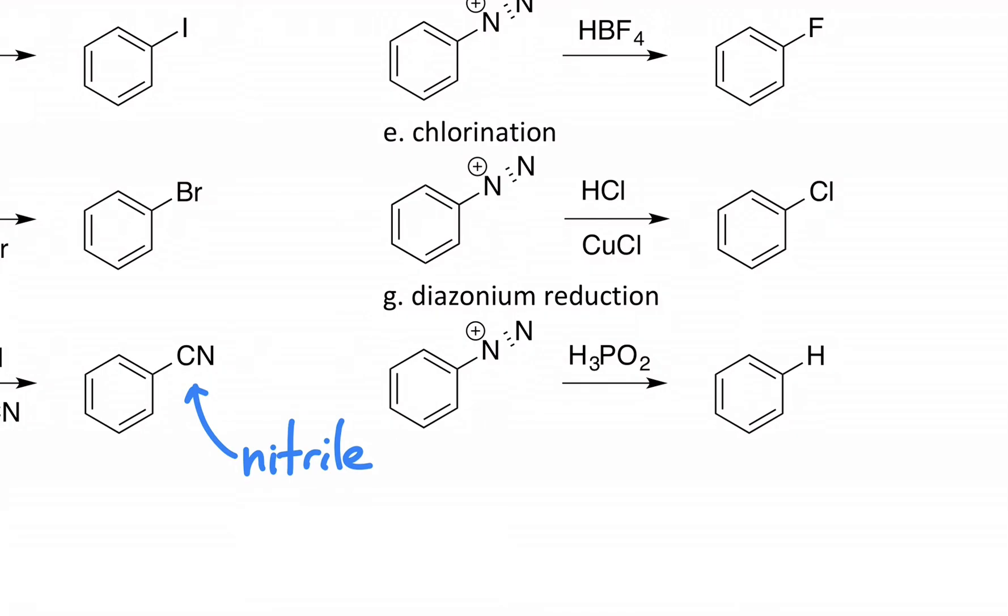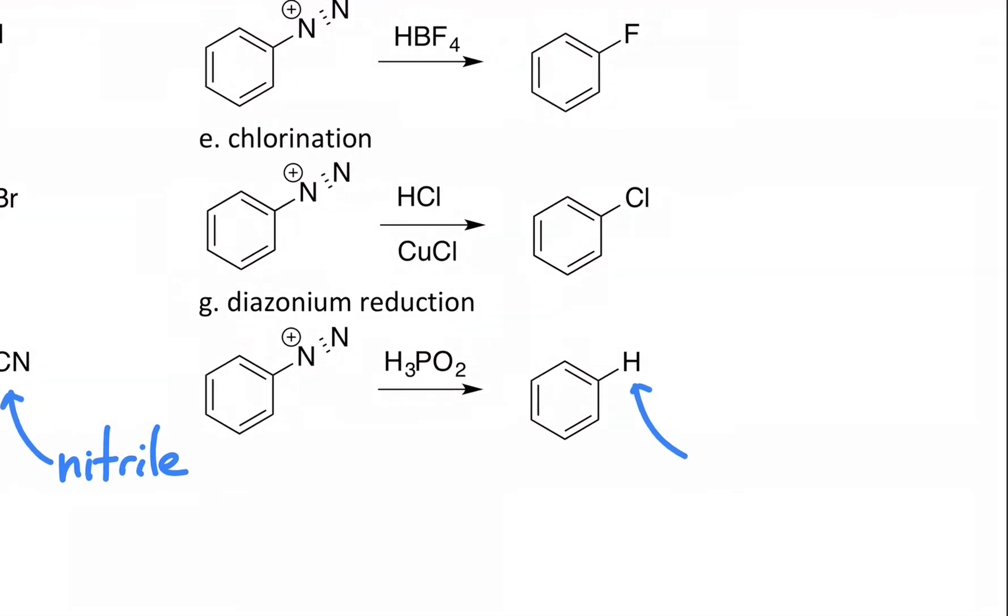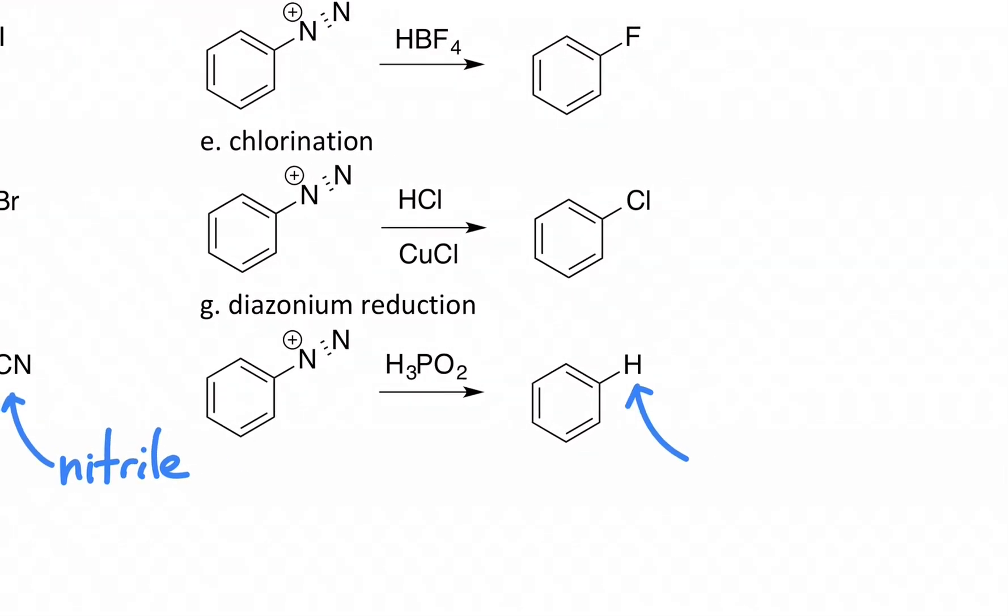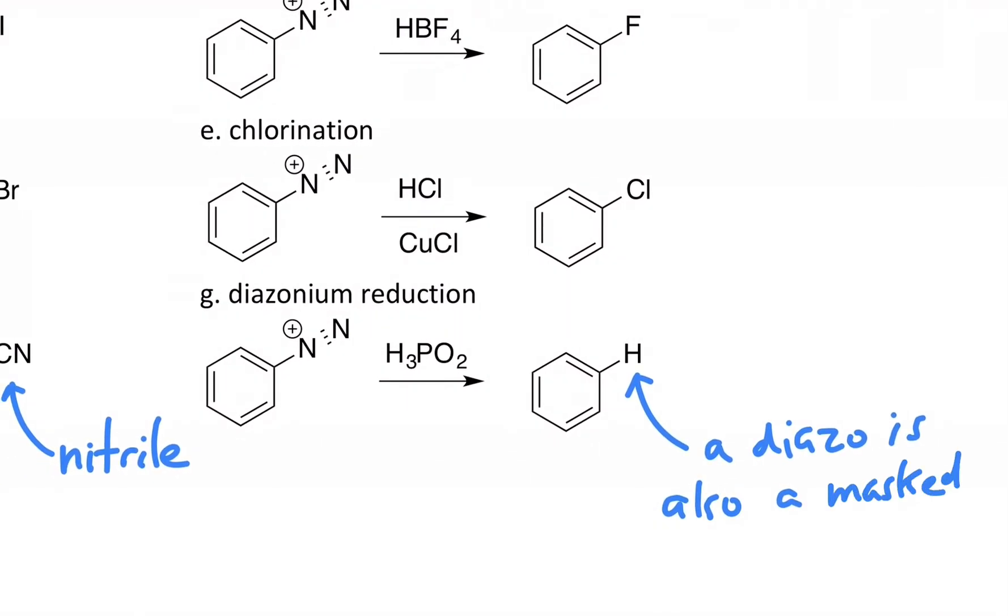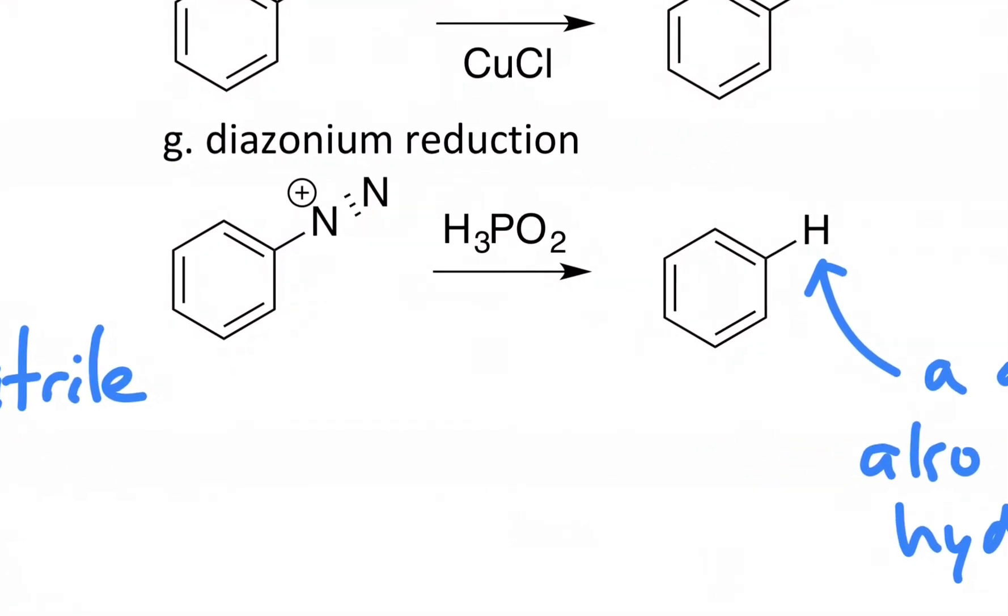And we can even replace this back as an original hydrogen. A diazo is also a masked hydrogen. So if we wanted to put a group on and be able to essentially take it off of the ring, you can replace it back with a hydrogen with what's called hypophosphorus acid. Very useful transformation, particularly if we need to put multiple things on the ring.